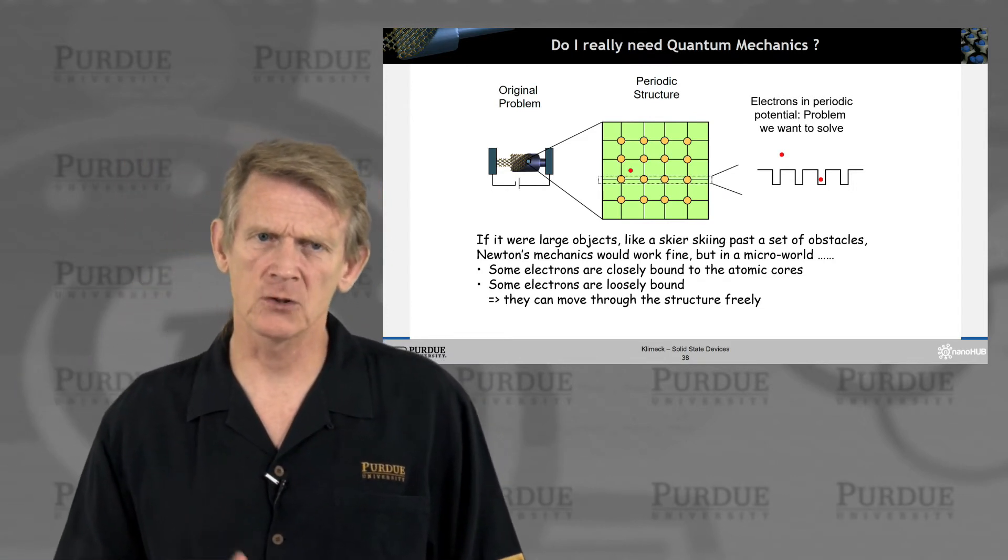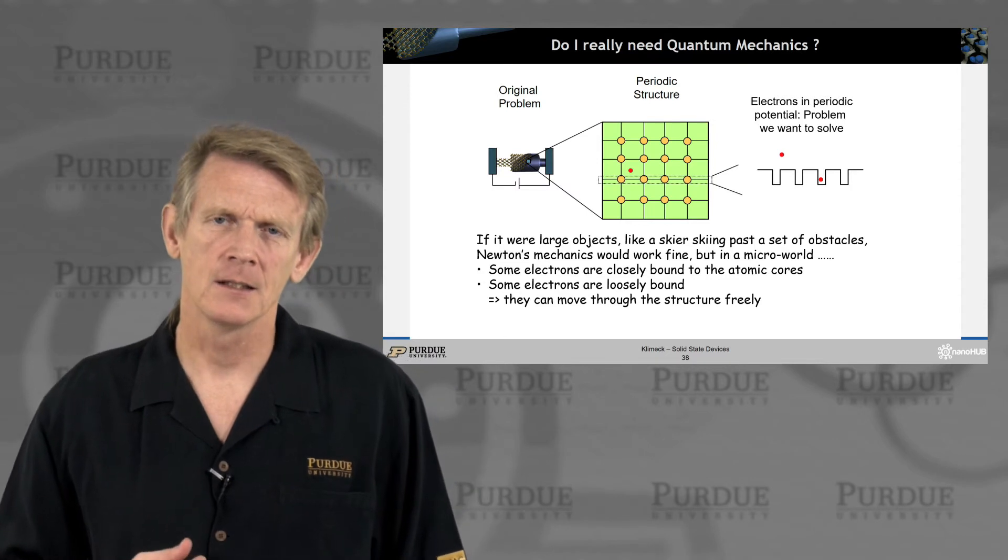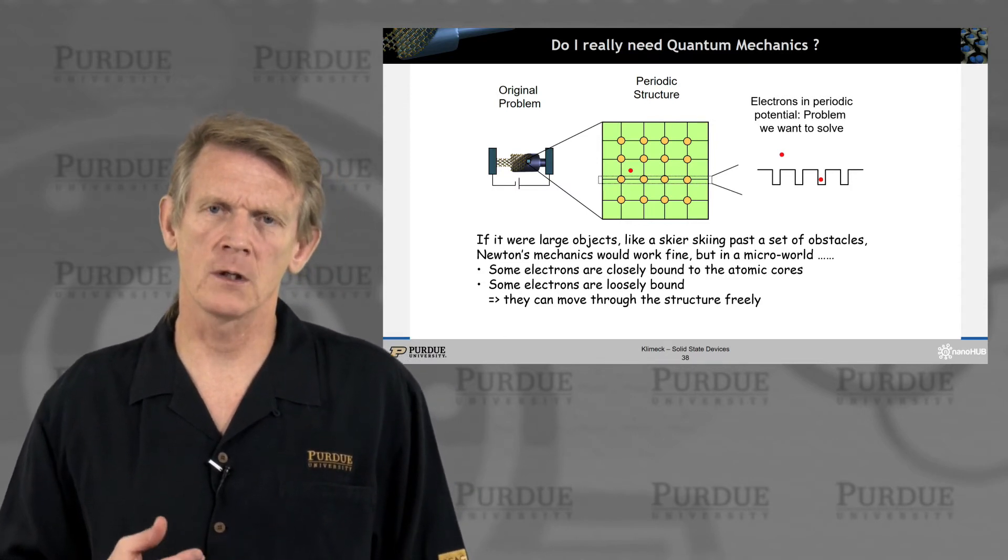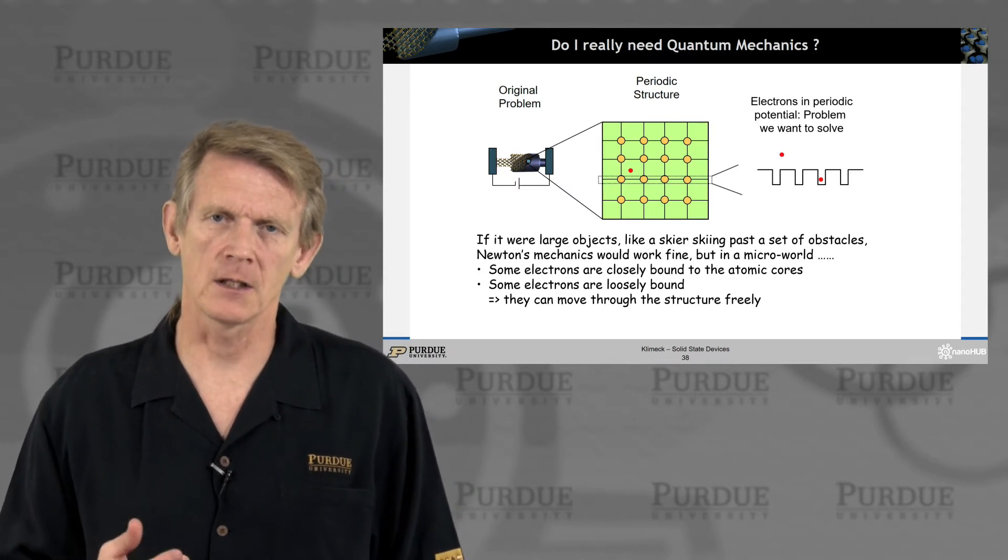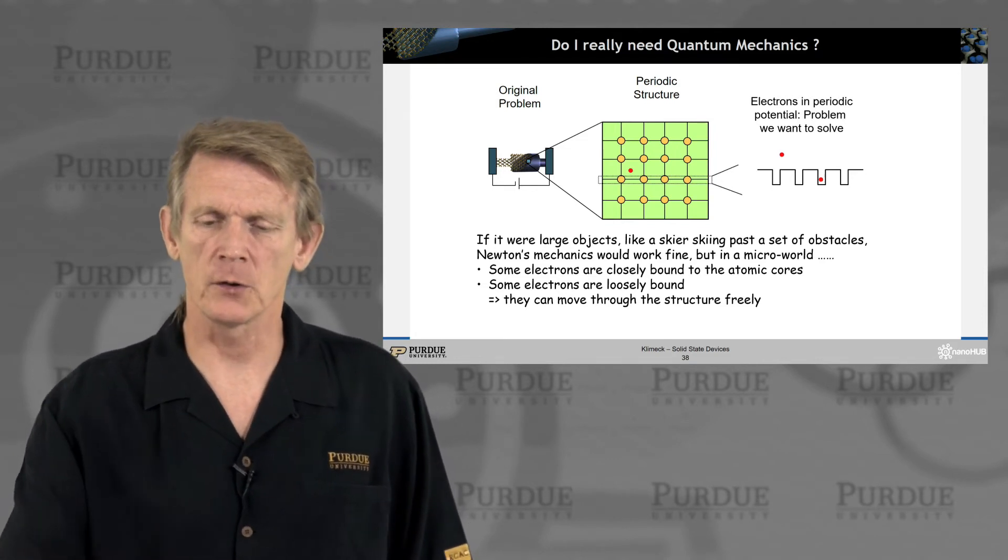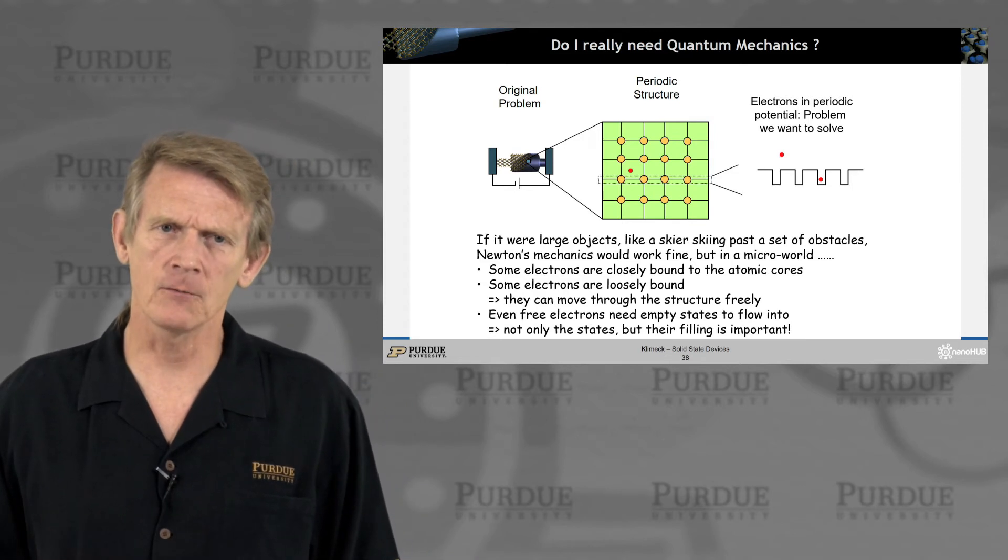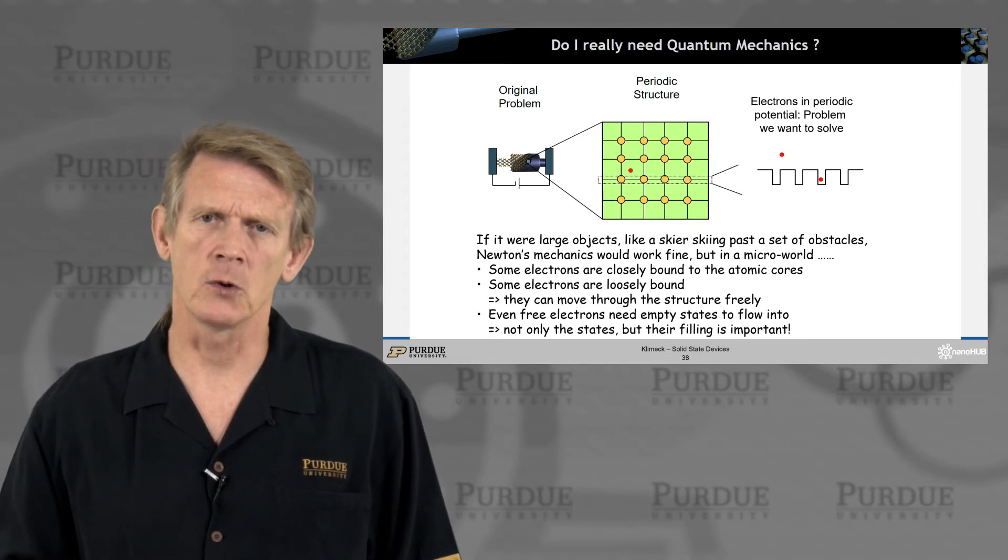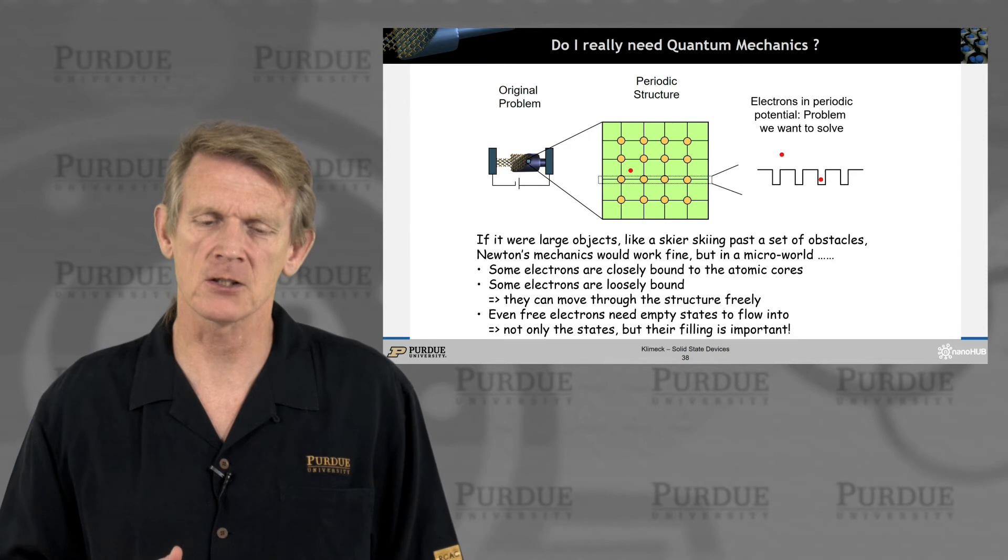There's a distinction between bound electrons that are tightly bound to the cores, maybe loosely bound, and then very weakly bound electrons that can flow. They could flow through the structure freely, and we need to understand what it means for electrons to move freely through the structure.